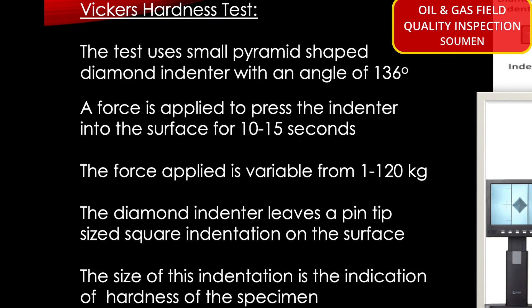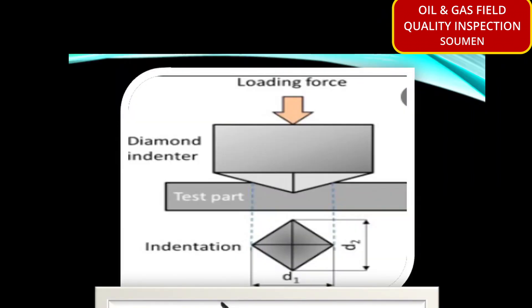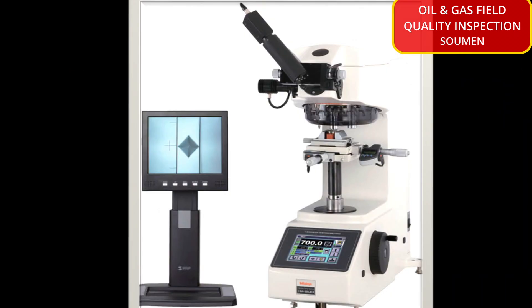The Vickers hardness test uses a small pyramid-shaped diamond indenter with an angle of 136 degrees. A force is applied to press the indenter into the surface for 10 to 15 seconds. The force applied is variable from 1 to 120 kilograms. The diamond indenter leaves a pin-tip size square indentation on the surface, and the size of that indentation is the indication of the hardness of the specimen.